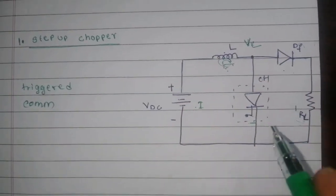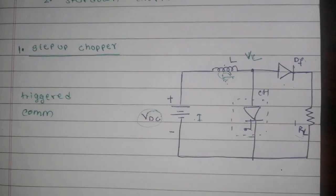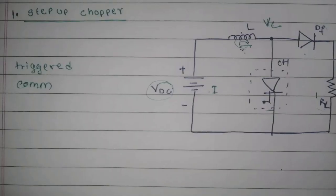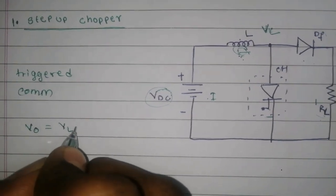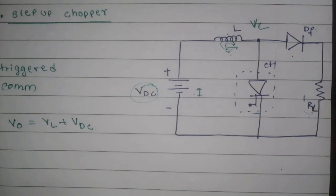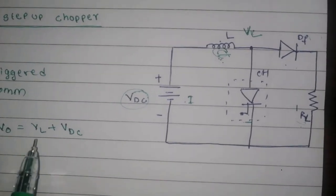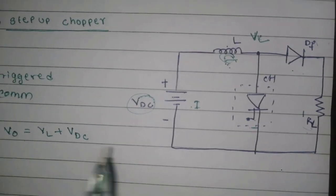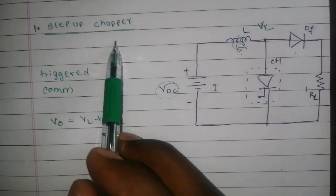This induces the voltage across this inductor, that is VL, and it adds to the source energy. V0 is equal to VL plus VDC. Therefore, the chopper produces an output voltage which is greater than the input voltage. This is the operation of step-up chopper.